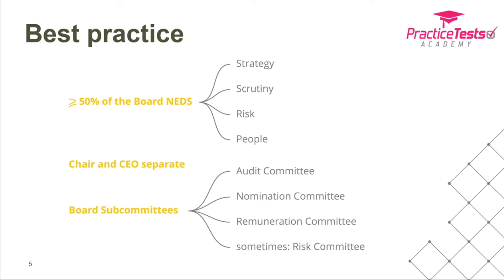The four roles of a non-executive director can be remembered with the acronym SSRP: Strategy, Scrutiny, Risk, and People. They contribute to the strategy of the business, scrutinize the executive directors to make sure decisions are in the best interest of shareholders, ensure that risk management processes are in place and operating, and on the people side, make sure the board has the right number and types of people — which tends to get sorted through the various committees.